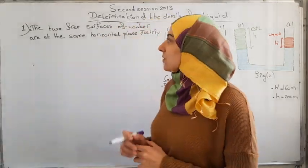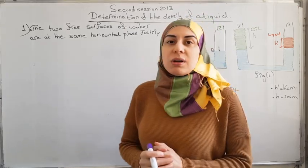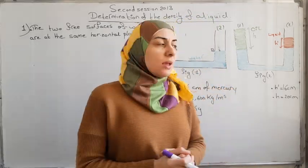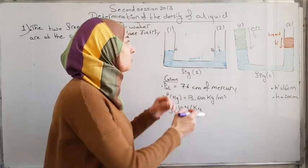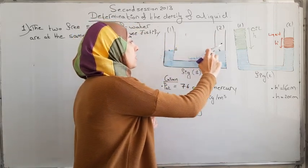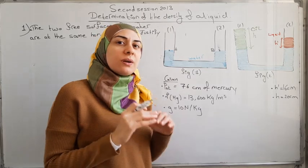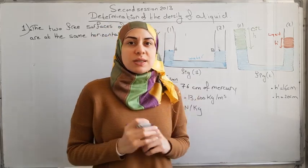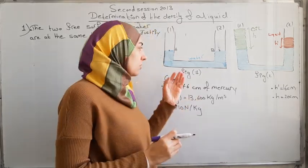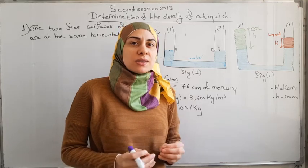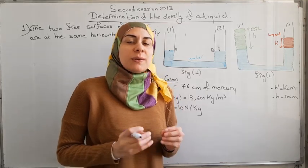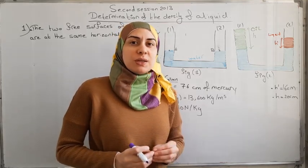In the first question, the two free surfaces of water are at the same horizontal plane — justify. If you look at the two branches of the U-tube, you can see that the free surfaces of the liquid are at the same horizontal plane, because they belong to the same liquid, which is water, that is at rest, and they are both subjected to the same pressure, that is P atmospheric.